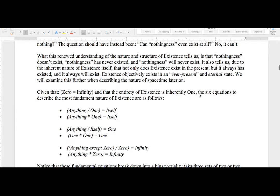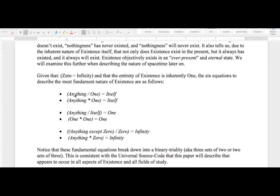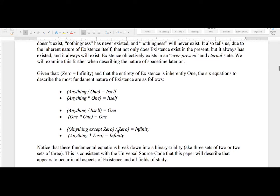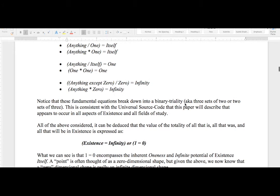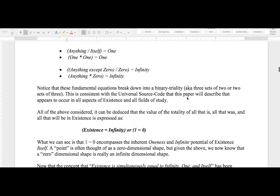Given that zero equals infinity and that the entirety of existence is inherently one, if it is a consciousness, the six equations to describe the most fundamental nature of existence are as follows: (Anything) / One = Itself. (Anything) × One = Itself. (Anything) / Itself = One. (One) × (One) = One. (Anything except Zero) / Zero = Infinity. And (Anything) × Zero = Infinity. Notice that these fundamental equations break down to a binary triality—three sets of two or two sets of three. This is consistent with the universal source code that this paper will describe that appears to occur in all aspects of existence and all fields of study.